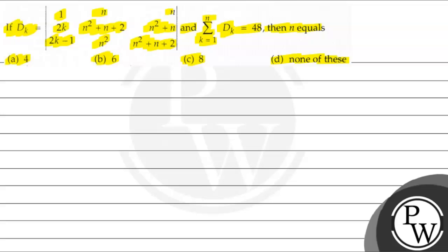So, given dk is equal to the determinant of the matrix with elements 1, n, n, 2k, n squared plus n plus 2, n squared plus n, 2k minus 1, n squared, n squared plus n plus 2. We have summation k goes from 1 to n, dk equals 48, then n equals 4. Option a is correct.